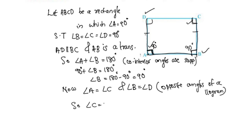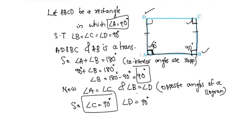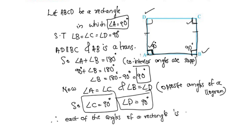Since angle A is 90 degrees, angle C is equal to 90 degrees. Angle B is 90 degrees, so angle D is equal to 90 degrees. Therefore, angle A is 90 degrees, angle B is 90 degrees, angle C is 90 degrees, and angle D is 90 degrees. Therefore, each of the angles of a rectangle is a right angle.